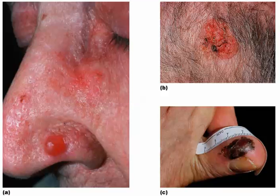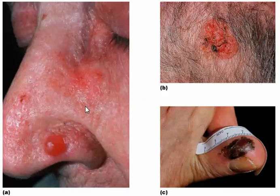Let's look first at A. We can see two parts here that are affected. This is basal cell carcinoma, also known as a rodent ulcer. This is basal cell carcinoma, which affects the cells of the stratum basale. And this would need to be monitored.